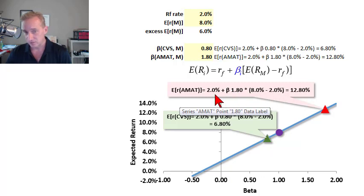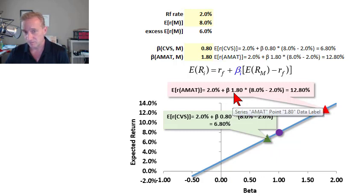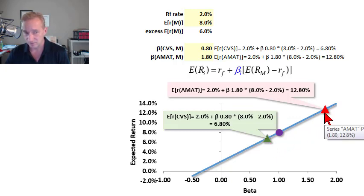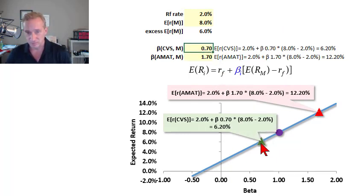And then we have here Applied Materials. That's my high beta stock. Its expected return is the risk-free rate plus the beta of 1.8 multiplied by the market's risk premium or equity risk premium of 6%, which gives me 12.8%. So the Capital Asset Pricing Model is telling me that for Applied Materials with a beta of 1.8, its expected return is 12.8%, much higher than CVS as compensation for the fact that its drop will be greater when there is a loss on the market return. And so you can see if I change the beta, for example, I'll change it to 1.7. Then I move down the security market line and I could do the same thing for CVS. Lower beta corresponds to lower expected return.